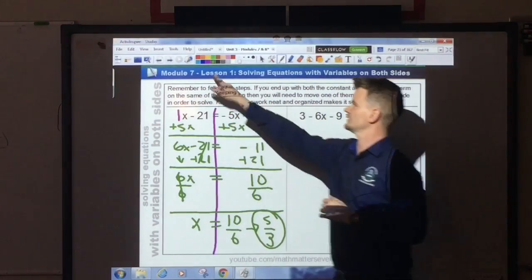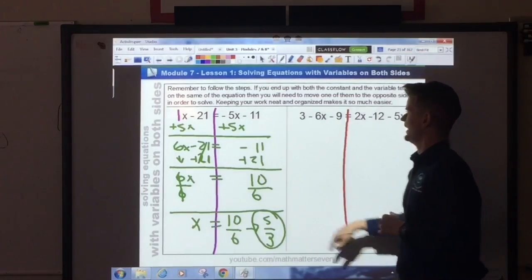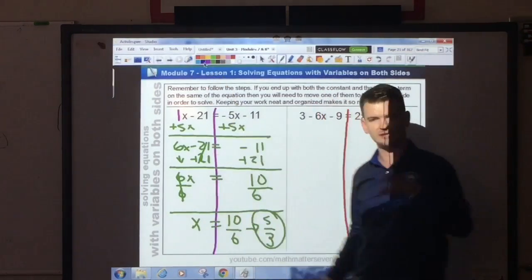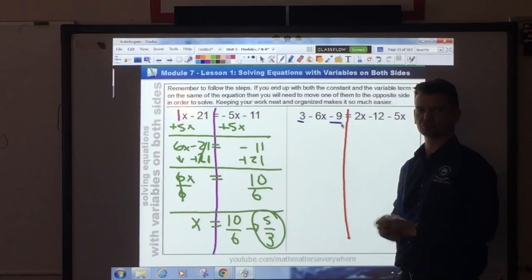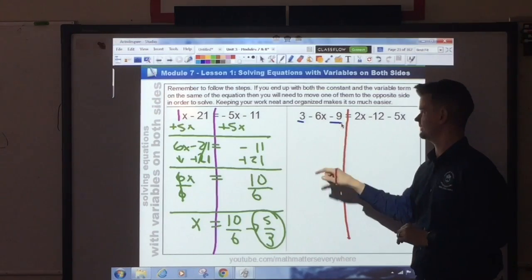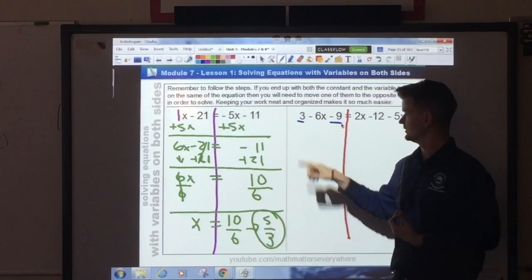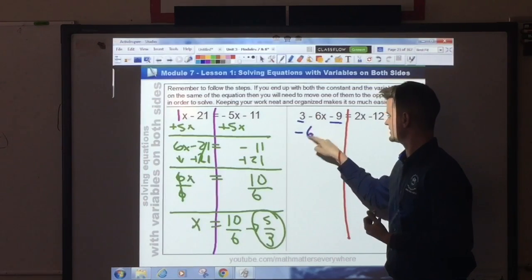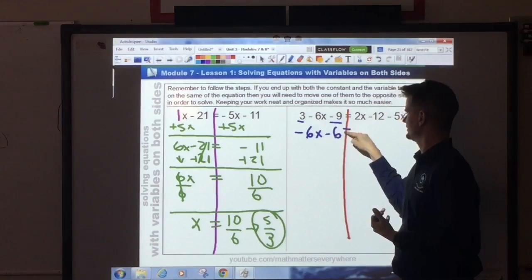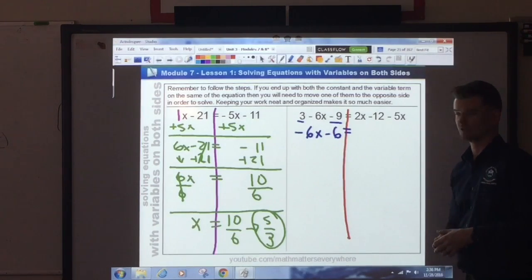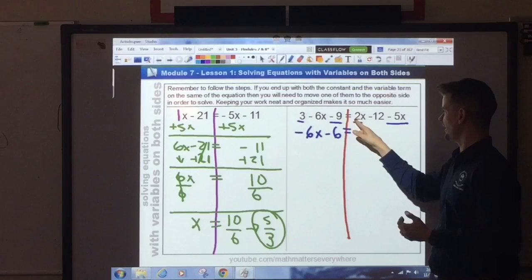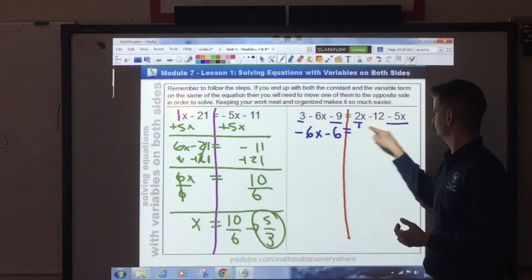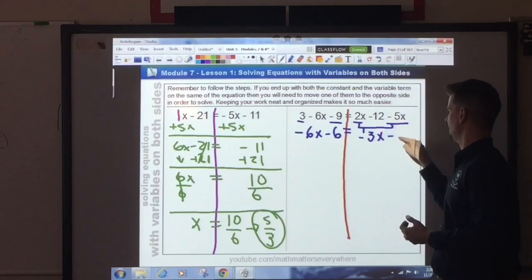One last problem to solve. I draw the line, and I start looking for like terms that I can combine. If I look on this side, I have two constants. I can combine those. 3 and negative 9 becomes negative 6. So I'll bring down the negative 6x. These combine to form negative 6. And the left side is simplifying. On the right side, I have two variable terms that I can combine. 2x and a negative 5x combine to form negative 3x. I bring down the negative 12.